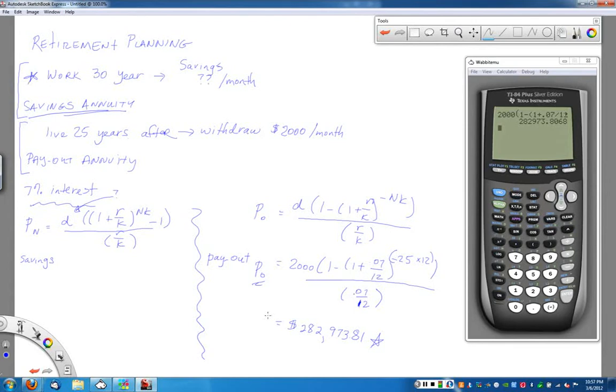If this is how much I want to end up with, when I come over here, that is how much money I need to have in savings when I'm done working. So this becomes my Pₙ number. At the end of my 30 years of working, I want to have $282,973.81 in my account. D is what I'm looking for - how much money do I have to save every month for 30 years to retire at this level of value.